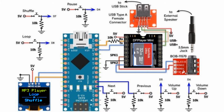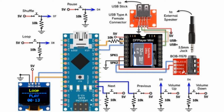And now for a quick demonstration. We press the loop button to loop the current track. We press the pause button to pause the track, and we press the button again to resume the track. We press the loop button again to exit the loop menu and return to the main menu.